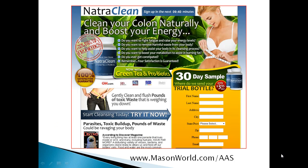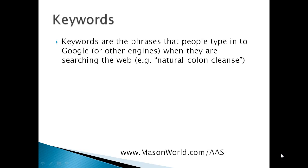This is the product we picked — the NatraClean colon cleansing product. We're going to try and promote this product. It's a CPA product, meaning that we get paid if someone takes the action of signing up for a free sample. What we need in order to promote our product is a series of articles that we're going to submit to article directories using AAS, and we want those articles to rank for certain keywords. Keywords are the phrases that people type into Google when they're searching the web — for example, if they're searching for a natural way to cleanse their colon, they might type in 'natural colon cleanse.'